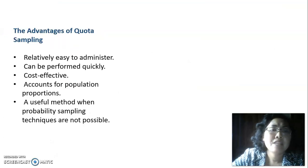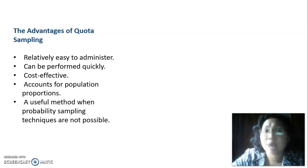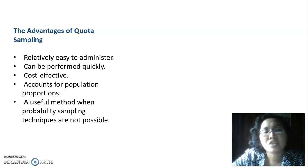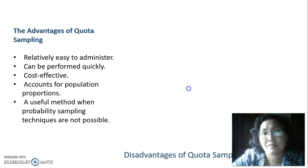The advantages of quota sampling are: it is relatively easy to administer, can be performed quickly, is cost effective, accounts for population proportions, and is a useful method when probability sampling techniques are not possible.